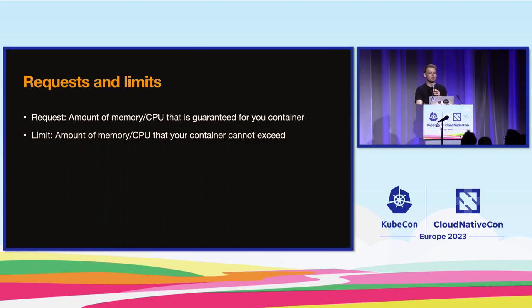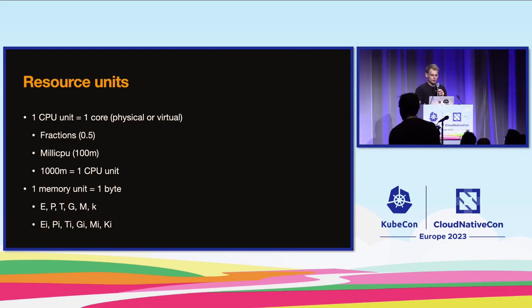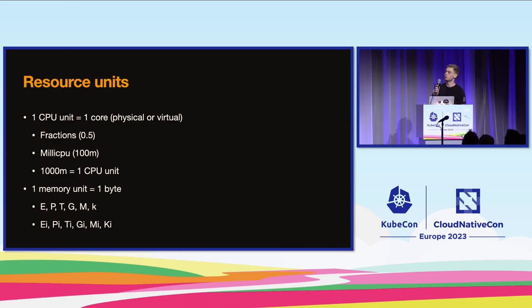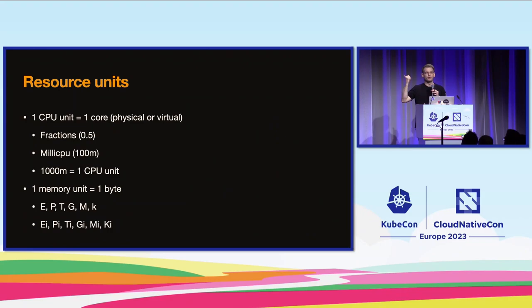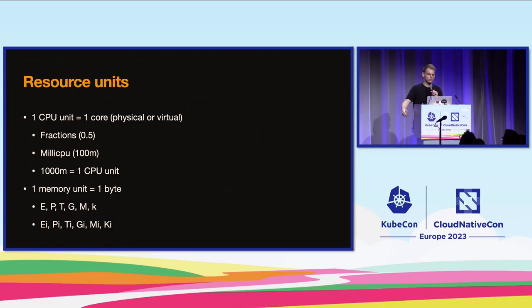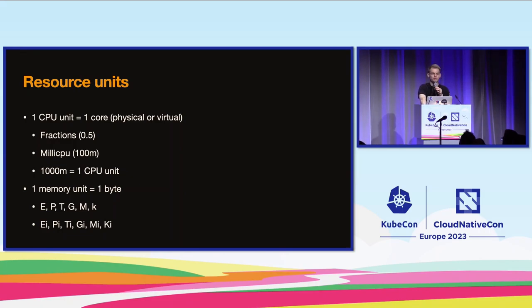For CPU, one CPU unit equals one core — either physical or virtual — and we can use fractions of that core using milli-CPU or milli-core, where 1000 milli-core equals one CPU unit. For memory, the base unit is bytes, and we can use all kinds of prefixes from kilobyte up to exabyte, as well as the binary equivalents from kibibyte up to exbibyte.